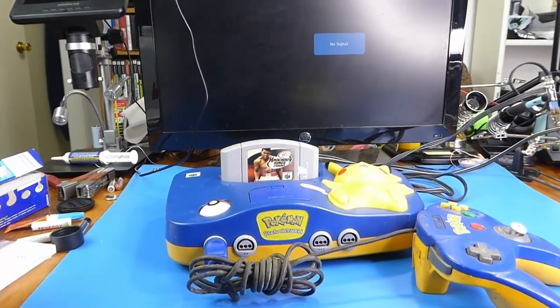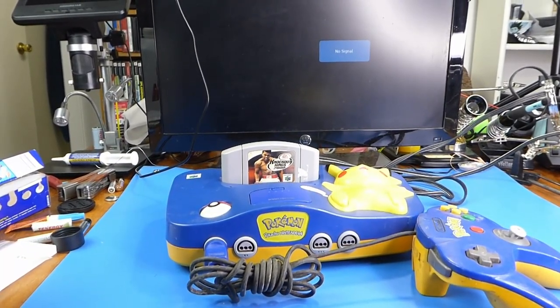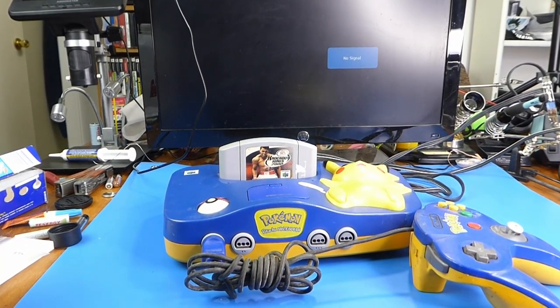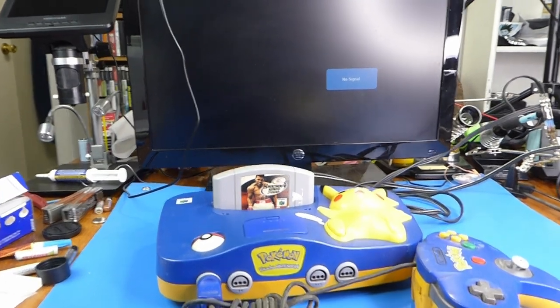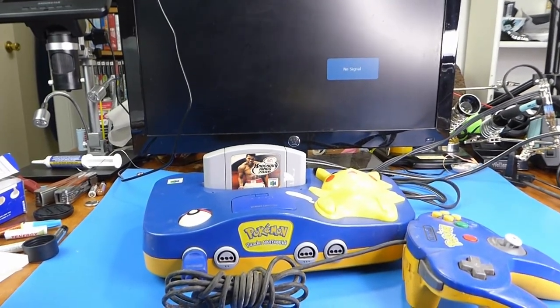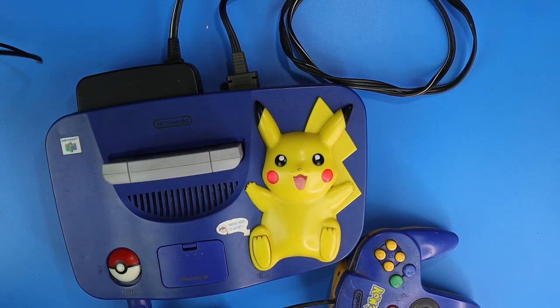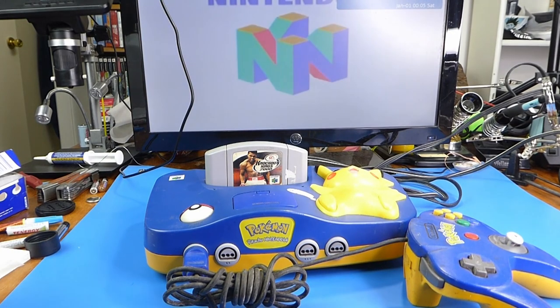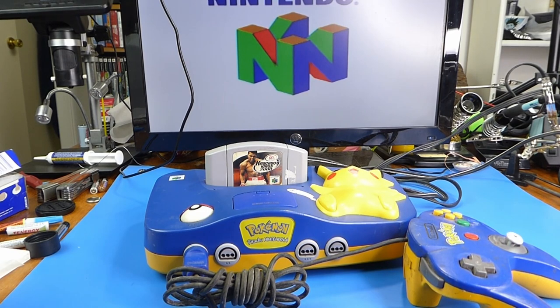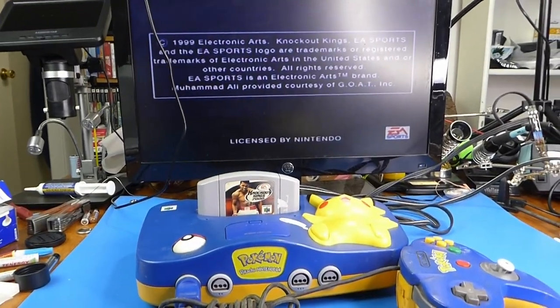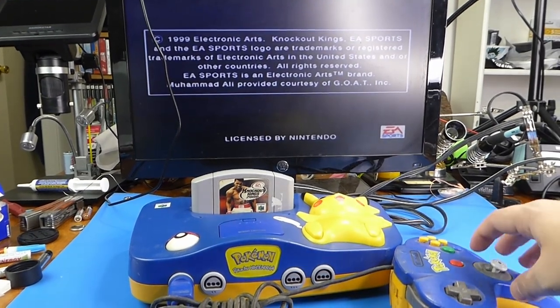In case you're wondering, there has been a fox wearing a sheriff's hat in the background of every video, just off screen. You couldn't see that it was there. That's normal, right? Anyways, let's see if the Pokemon Pikachu N64 actually works. I've got the Westinghouse, beautiful, 24 inches of glory hooked up. Okay, cool, so the Nintendo 64 does work.